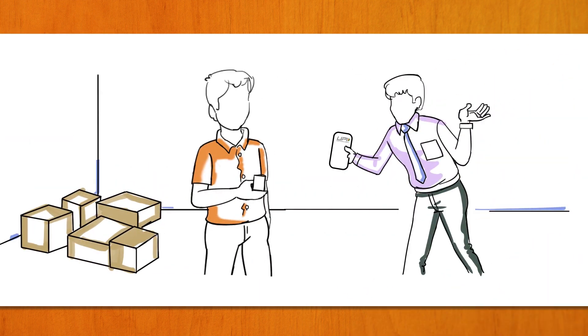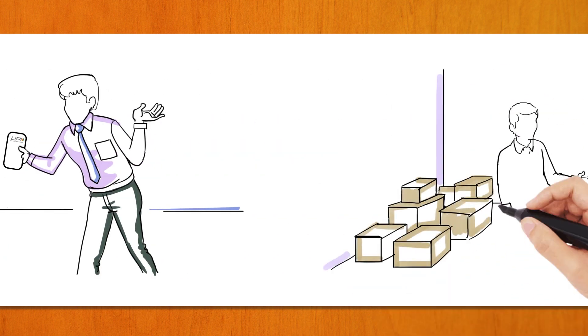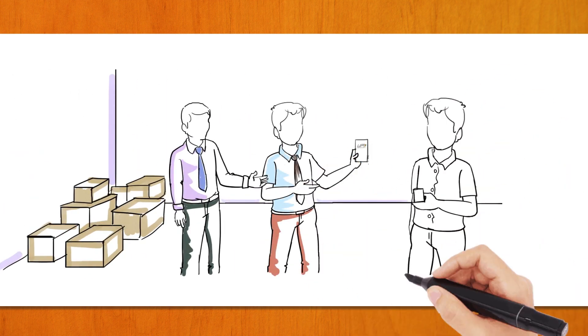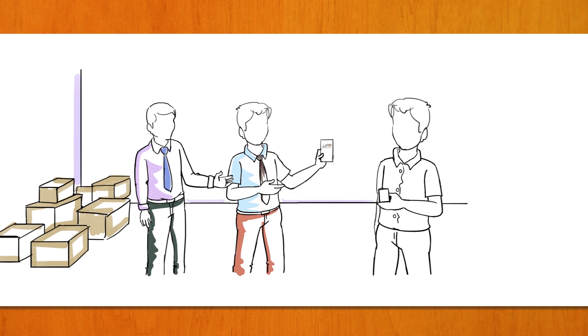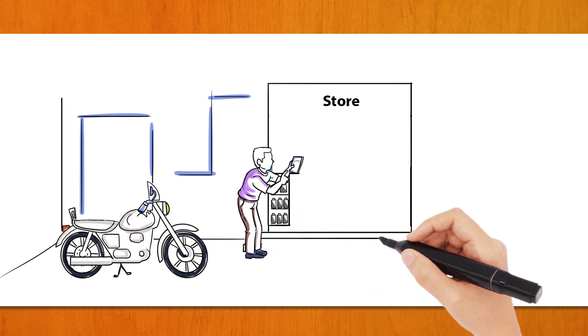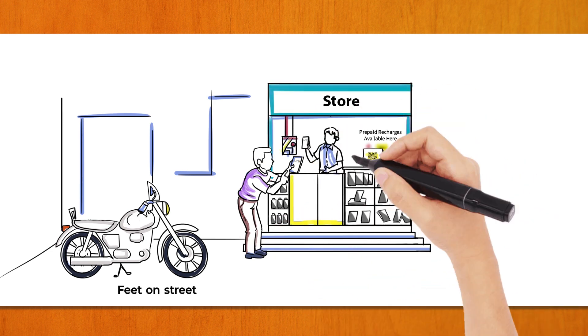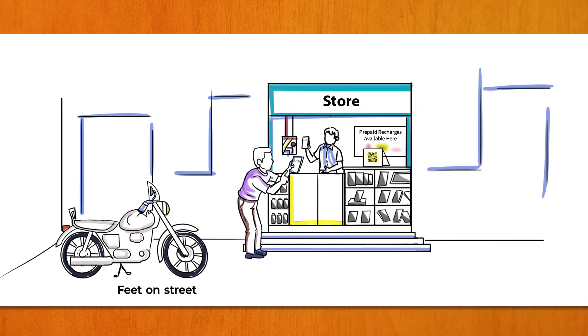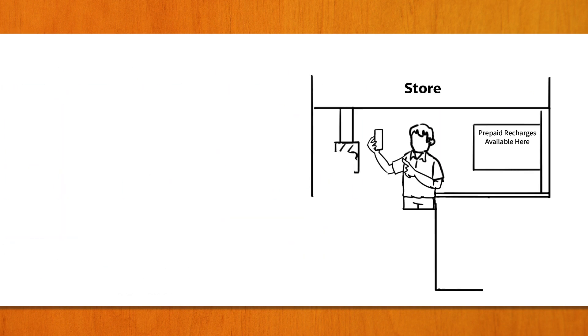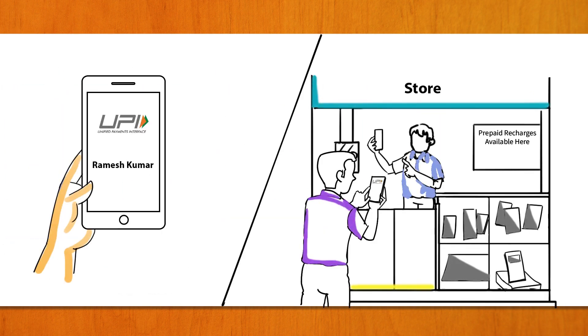The bank representative approaches the distributor with UPI as a solution for collecting payments. It creates retailer UPI IDs and FOS QR code for the distributor with multi-agent functionality for Bheem UPI, which the distributor then gives to their feet on street,